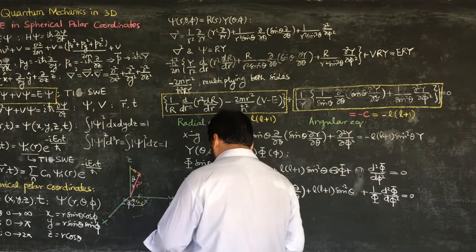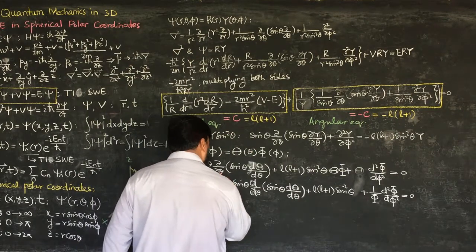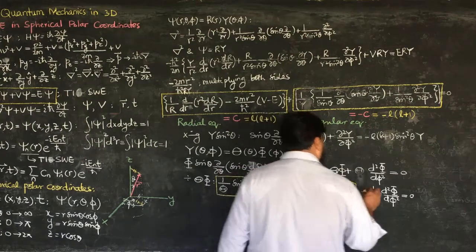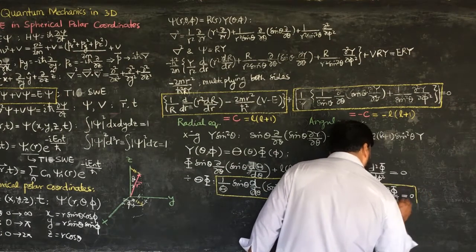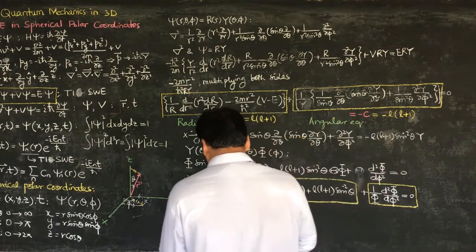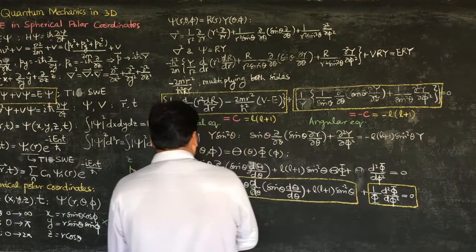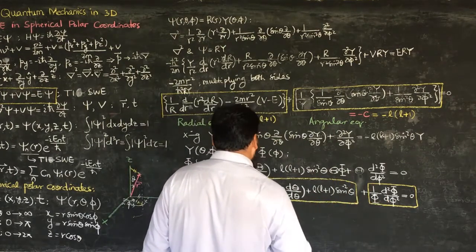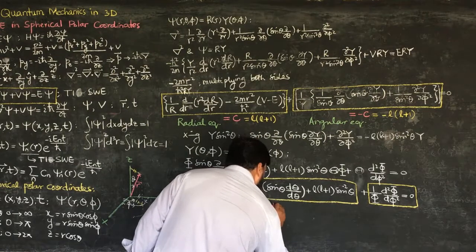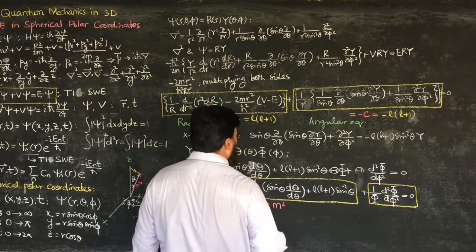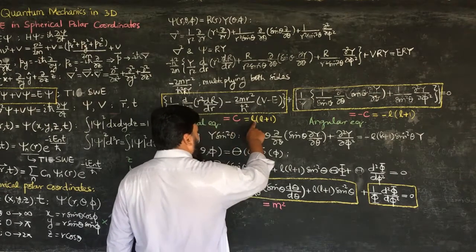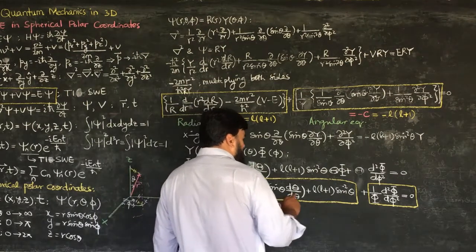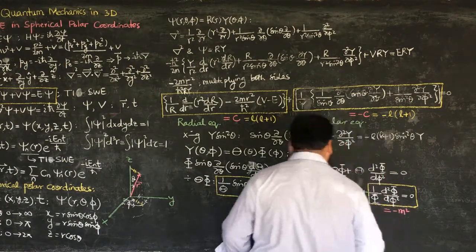The θ-dependent equation depends only on the zenith angle, while the φ-dependent equation depends only on the azimuth angle φ. Since their sum equals zero, each must equal a constant. I set the φ-portion equal to -m² and the θ-portion equal to +m², for reasons that will become clear shortly.